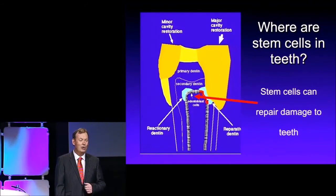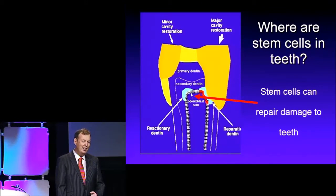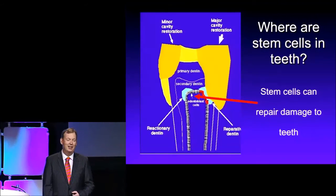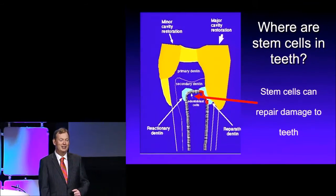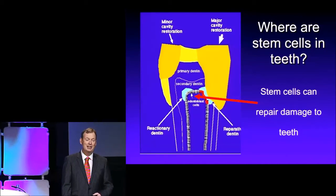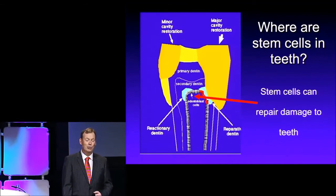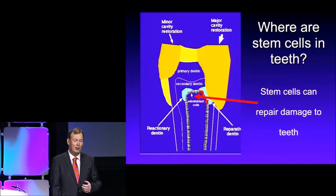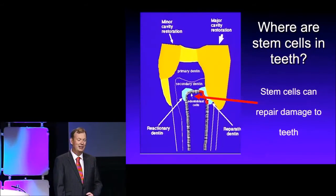So if we expose the pulp, what happens is we kill the odontoblasts. When the odontoblasts are killed, the other odontoblasts cannot replace them. So what happens is the stem cells form new mineral. When we see dentin bridges, that's the stem cells from the pulp that are forming that dentin bridge.